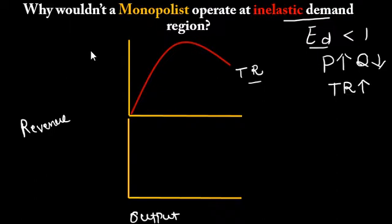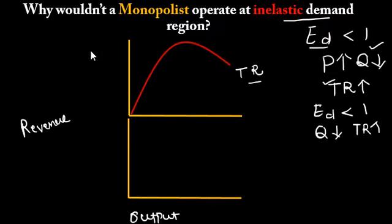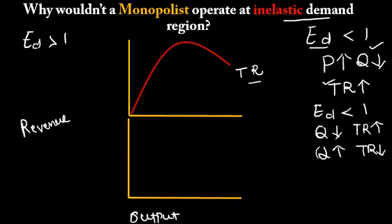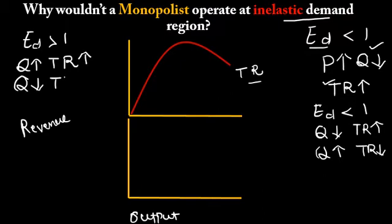So when elasticity of demand is less than 1, with a decrease in quantity, total revenue increases, and with an increase in quantity, total revenue decreases. On the other hand, when elasticity of demand is more than 1 — elastic demand — the relationship is in the same direction: when quantity increases, total revenue increases, and when quantity decreases, total revenue decreases.